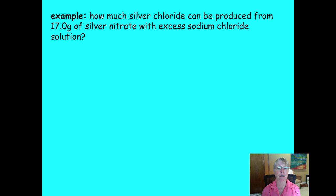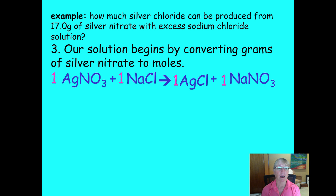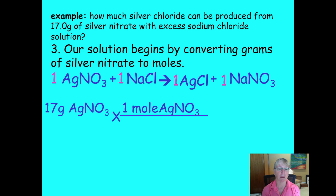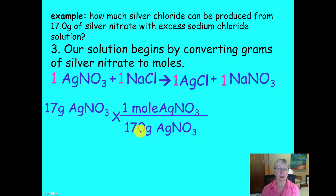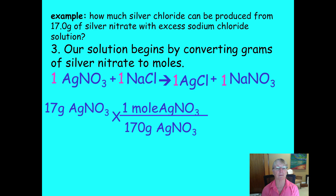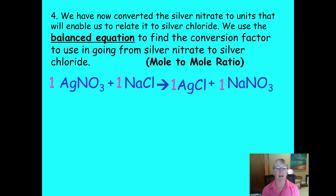Continuing with this molar ratio, we take the 17 grams given — this is called the entry number. Either you're given moles, which makes your work easier, or you're given grams and have to convert to moles. Here is the process of converting 17 grams of silver nitrate into moles. The molar mass of 170 g/mol comes from the periodic table: one silver, one nitrogen, and three oxygens. 17 divided by 170 gives one tenth of a mole.